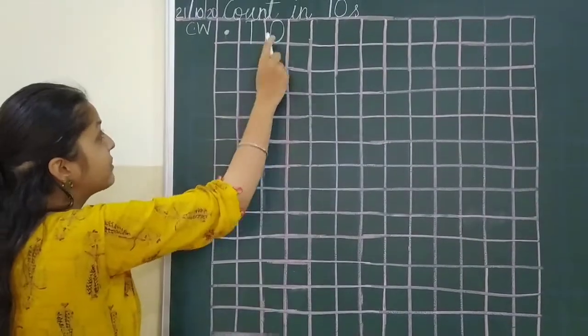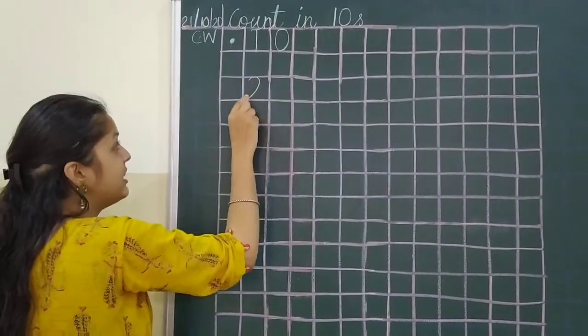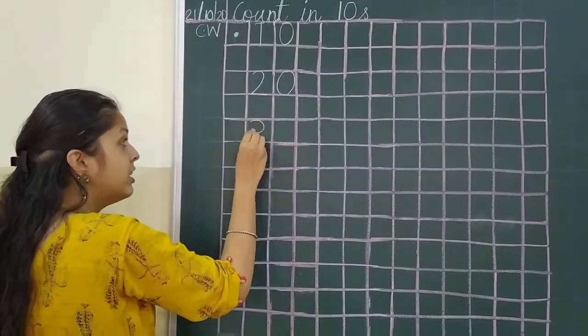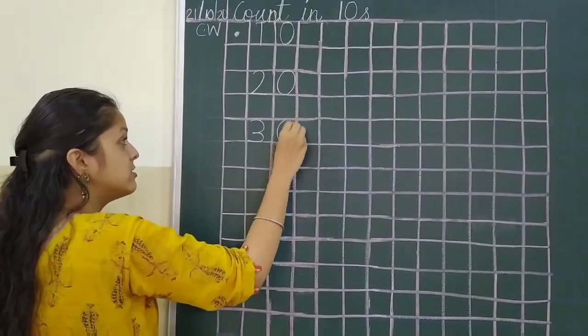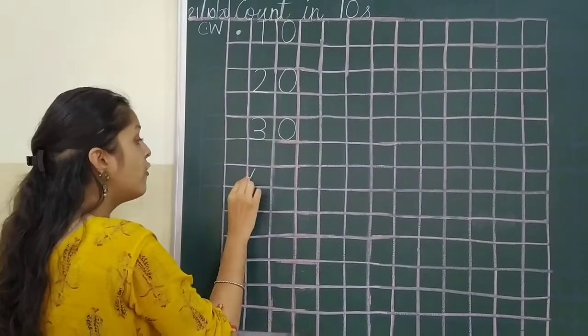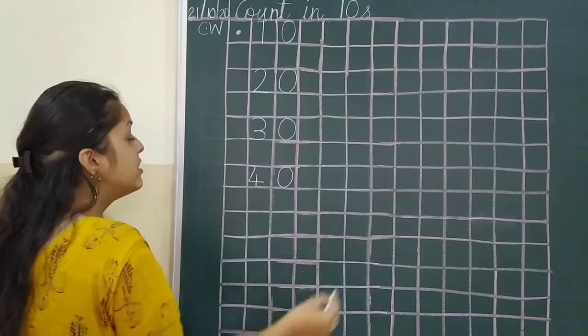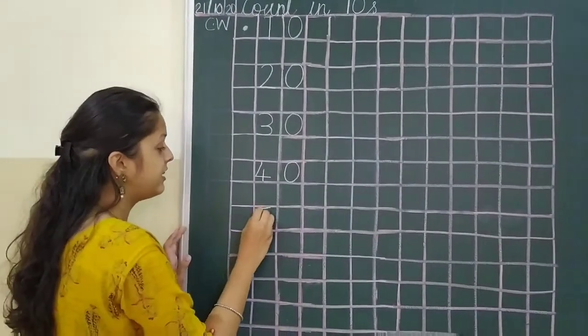So after ten, next twenty. Next thirty. After thirty, forty. We learnt already before. Right? So now we are revising it.